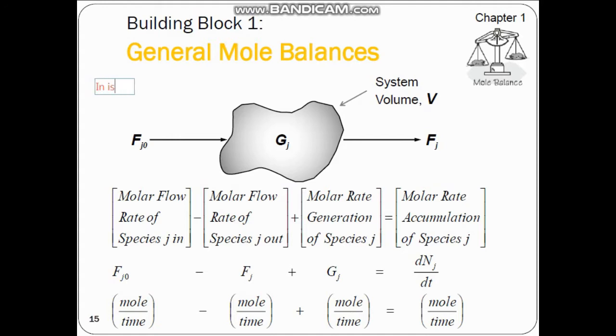But in the case where in is not equal to out, then our equation would be in minus out equals the amount that is accumulated. Some amount would go in and some would go out, but some amount would reside in this system. That amount would be called the accumulated amount.